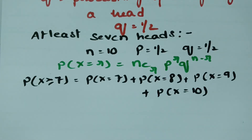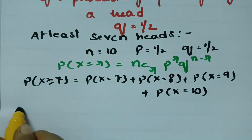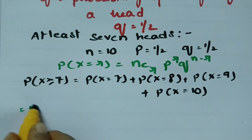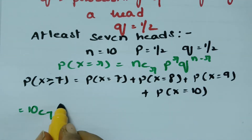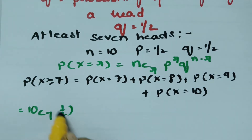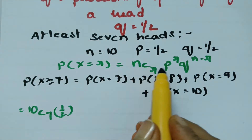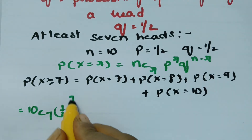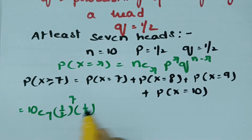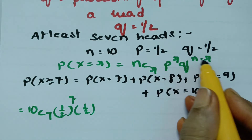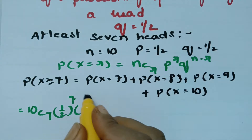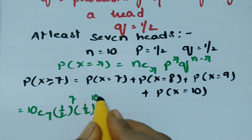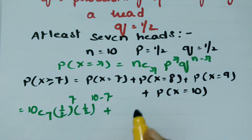If I substitute into the formula: what is N? N is 10. So this is 10C7. What is P? Half. Half power R — what is R here? 7. And Q is equal to half power 10 minus 7, so that is 10 minus 7 which equals 3.